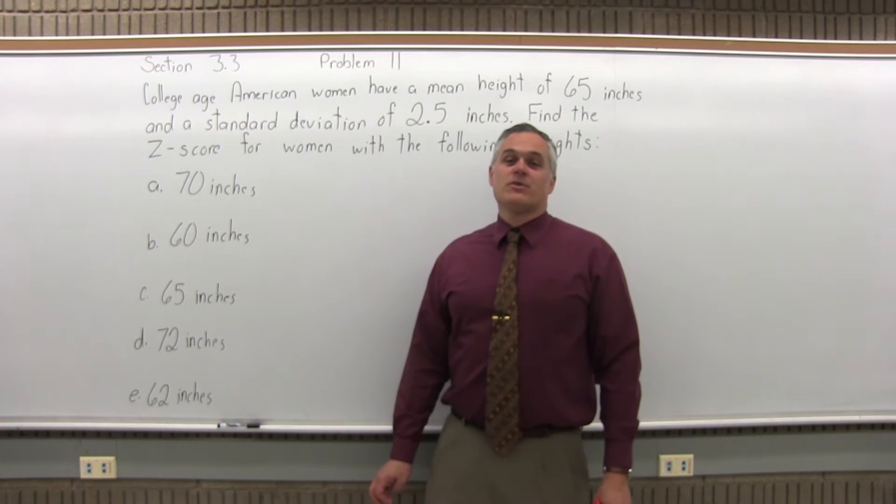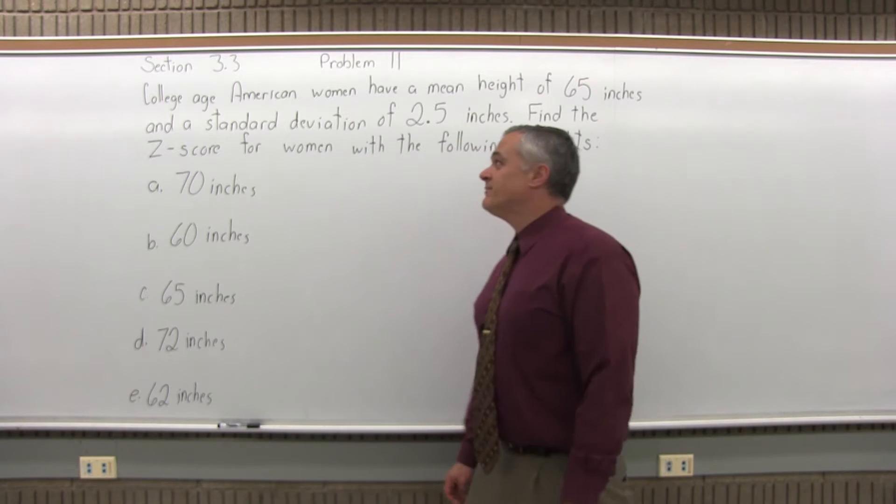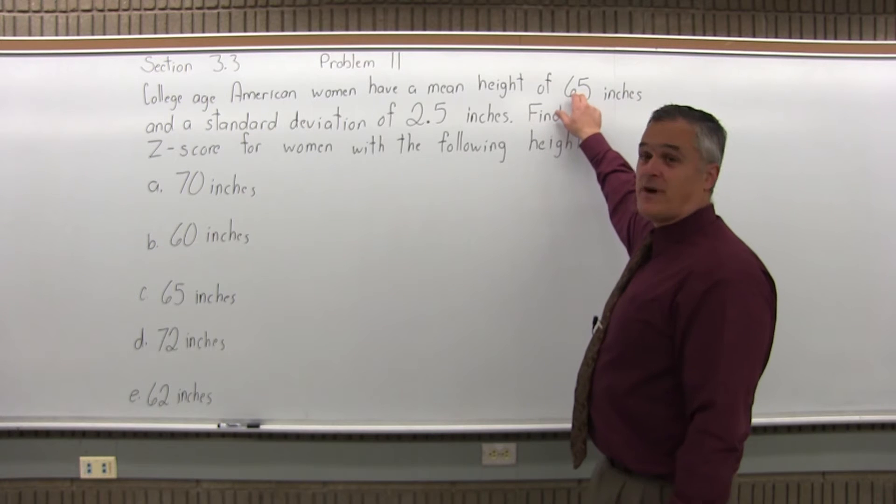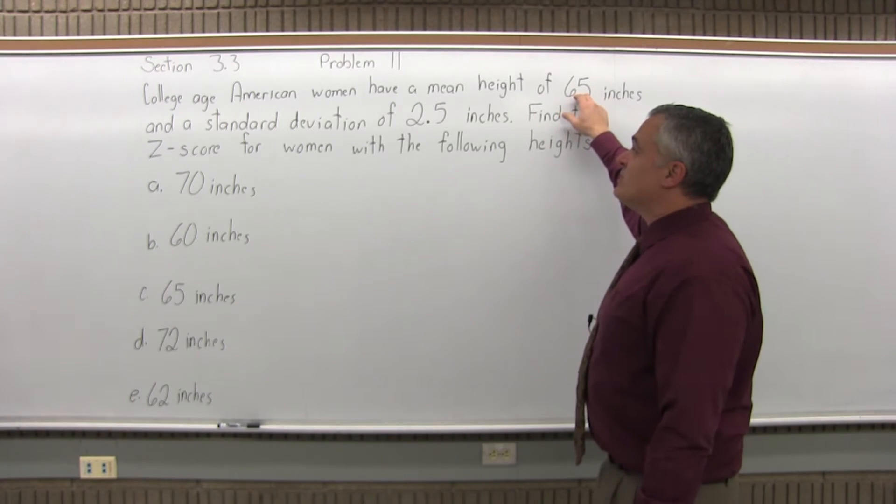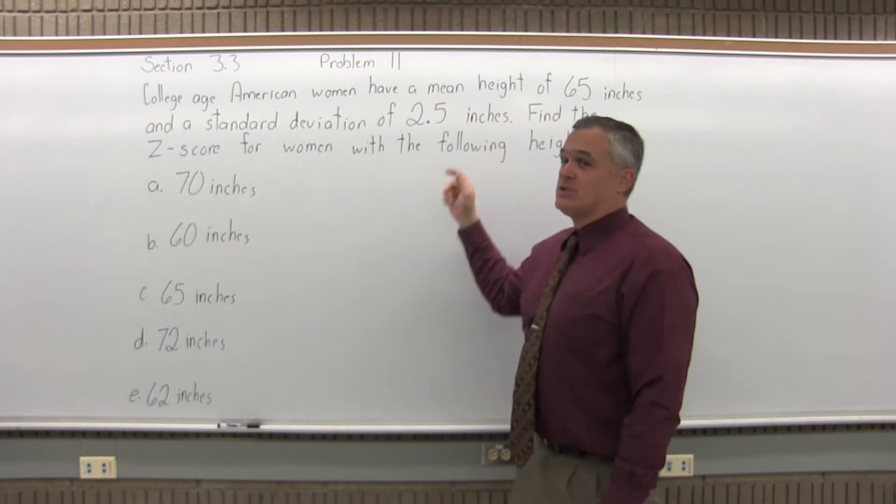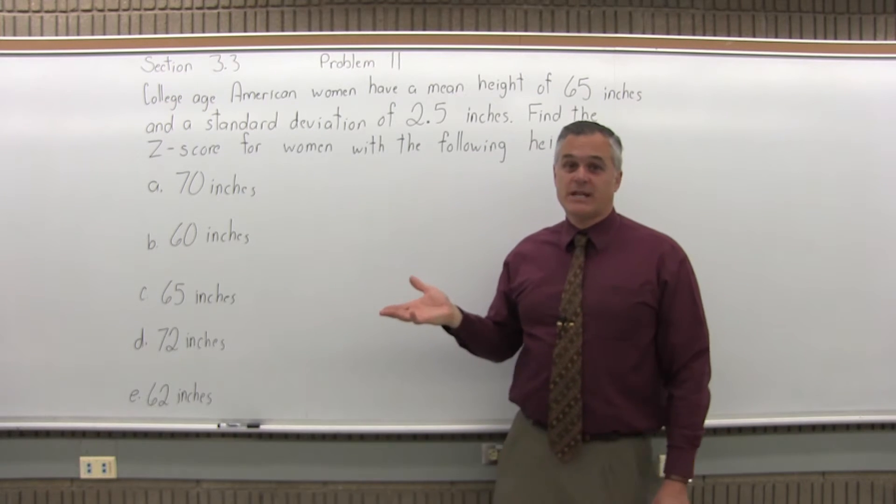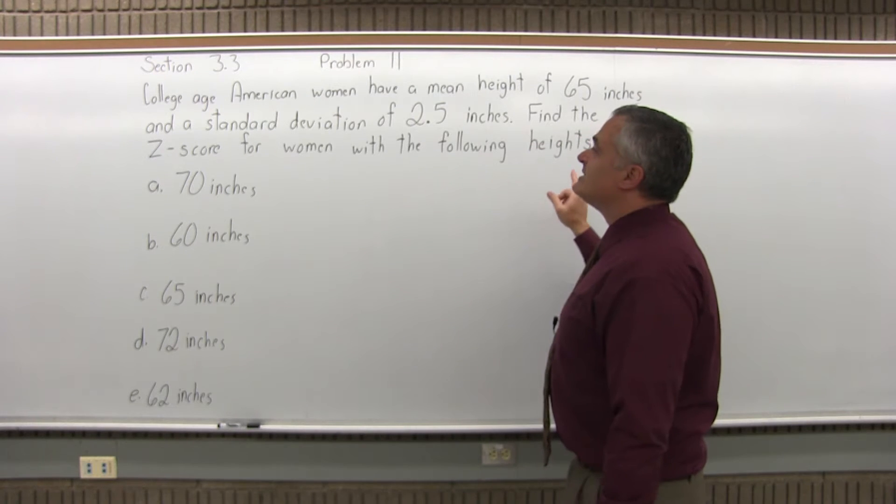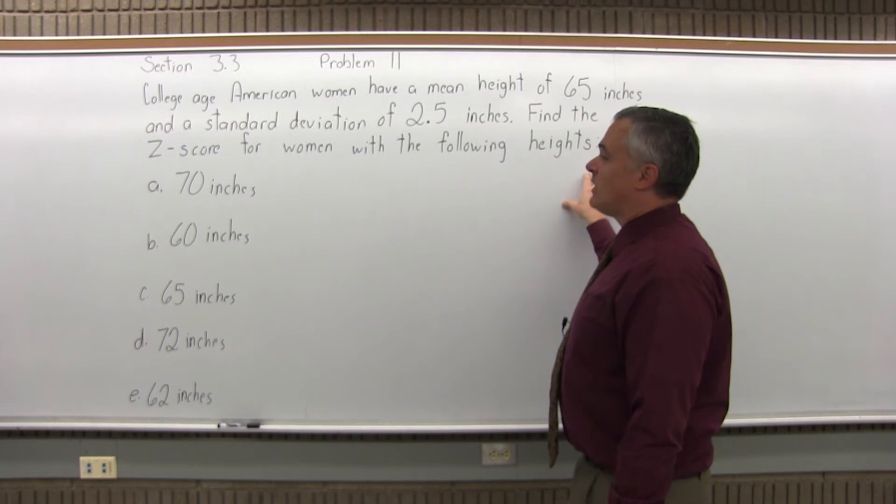This is Section 3.3, Problem number 11. It says, college-age American women have a mean height of 65 inches, that's 5 foot 5, with a standard deviation of 2.5 inches. So on average, from one woman to the next, the difference in their height is 2.5 inches. Find the z-score for women with the following heights, so 70 inches.